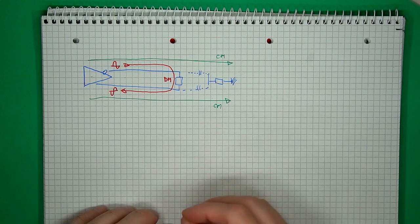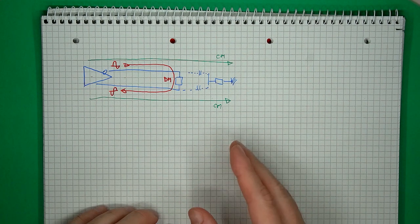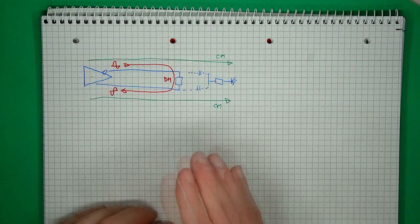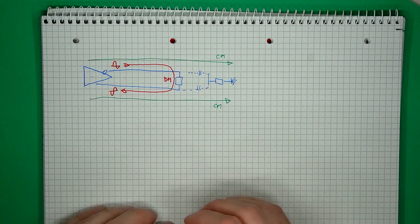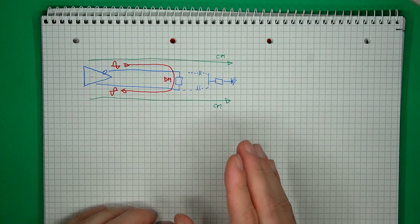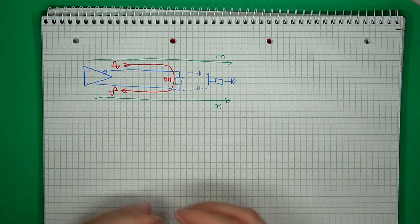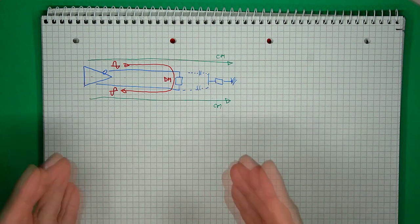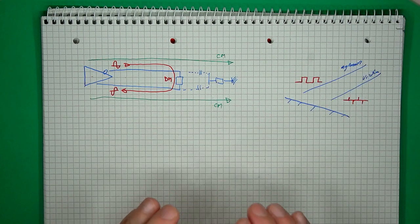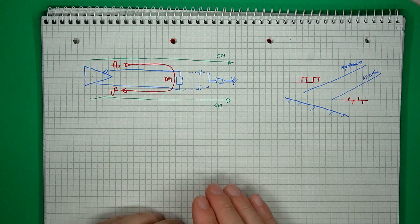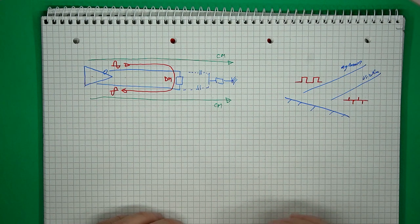You also have cases like the USB 2.0 standard, where the differential mode impedance is specified to 90 ohms ±15%, and in certain cases, a common mode impedance is also specified somewhere between 21 and 39 ohms.